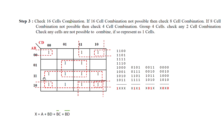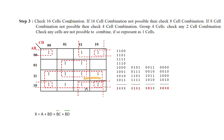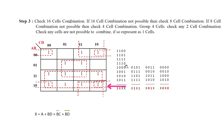These eight 1s can be grouped together. Then these four 1s form a group. If a 1 is already in a group of 8, it can also be grouped with adjacent 1s. Then these two and these two can form a group of 4. All four corners can also be grouped together. So we get group 1, group 2, group 3, and group 4.